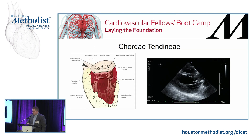The chordae tendineae are primarily composed of collagen with some elastin. They have a little bit of stretch — about 10 to 20 percent within the cardiac cycle — but are otherwise somewhat rigid and fixed, giving the mitral valve its structure during the relaxation phase of the cardiac cycle.